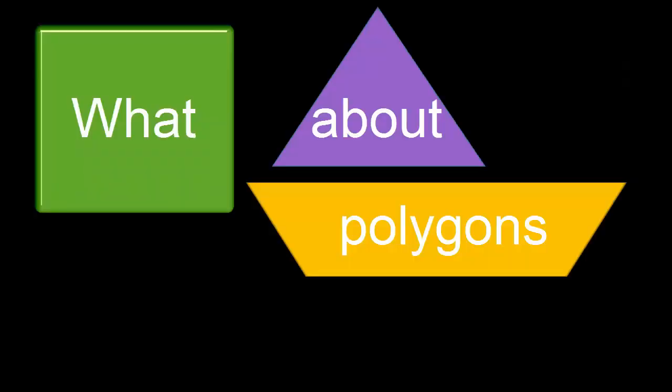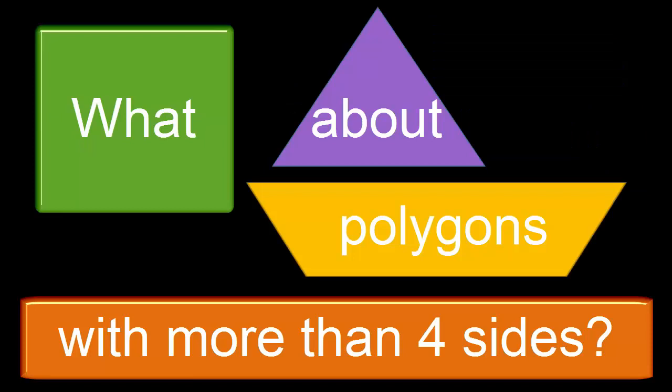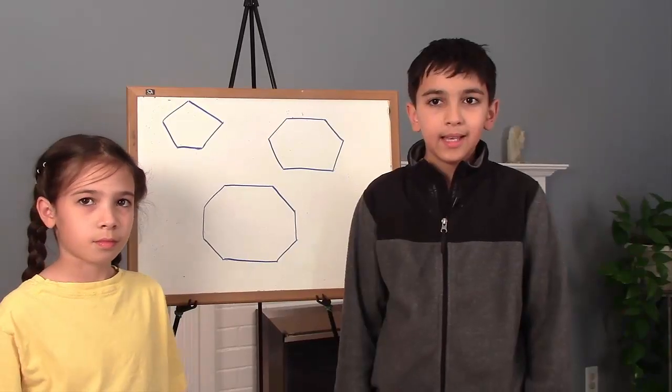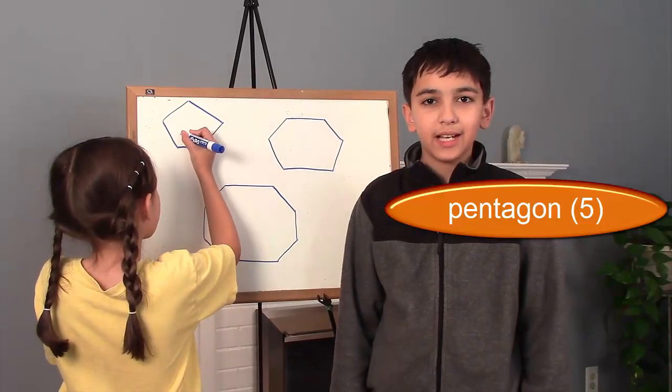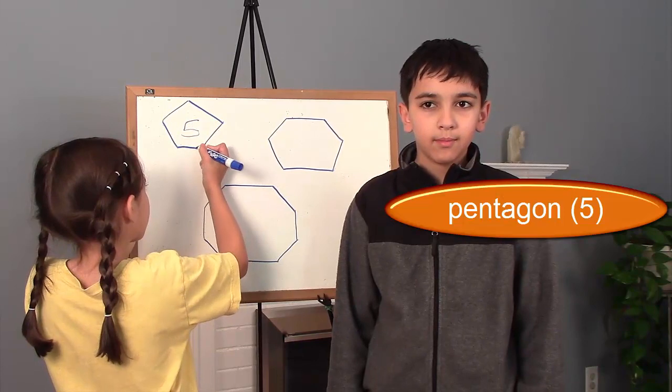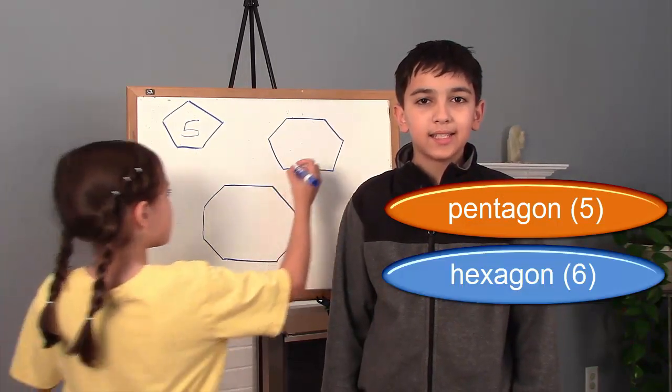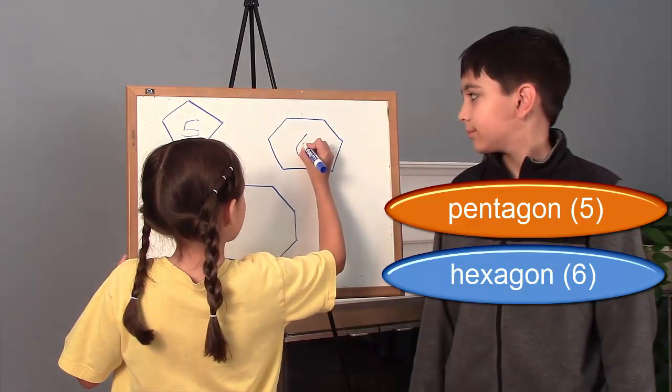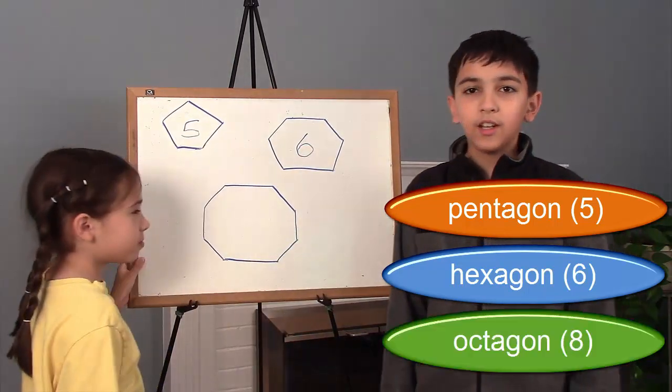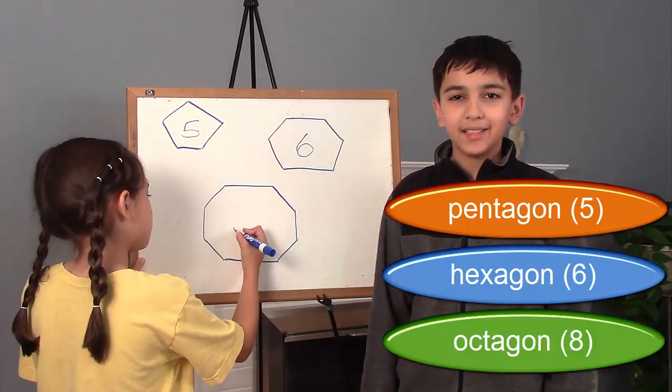Okay. But what about polygons with more than four sides? Do you know the names of those shapes? A pentagon has five sides. A hexagon has six sides. An octagon has eight sides.